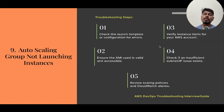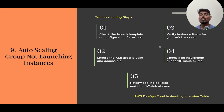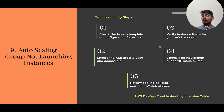The next question is: Auto Scaling group not launching new instances. First, check the launch template or launch configuration for any errors. Ensure the AMI used is valid and accessible. The launch template defines the AMI, instance type, security group, IAM role, and user data scripts for new instances. Launch configuration is the legacy option; today we use launch templates because they support multiple versions.